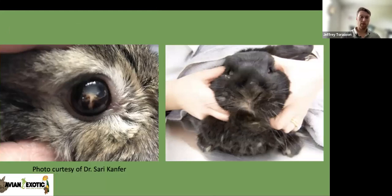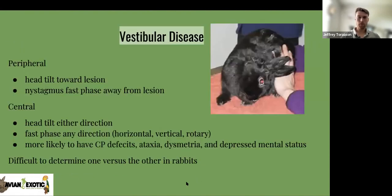On the left here we have that phacoclastic uveitis — you can see the characteristic appearance. On the right, this rabbit is not snarling; he's got more of a facial contracture. The facial nerves on that side of his face are actually being affected by this disease.